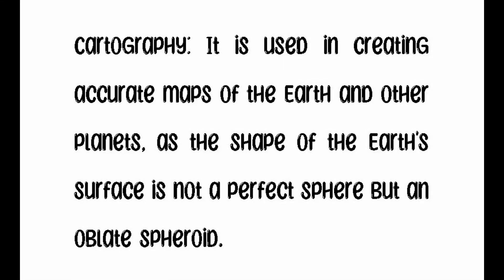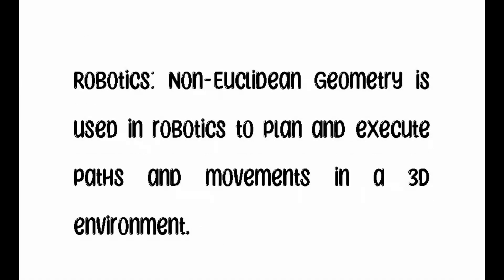In cartography, it is used in creating accurate maps of the Earth and other planets, as the shape of the Earth's surface is not a perfect sphere but an oblate spheroid. In robotics, non-Euclidean geometry is used to plan and execute paths and movements in a 3D environment.